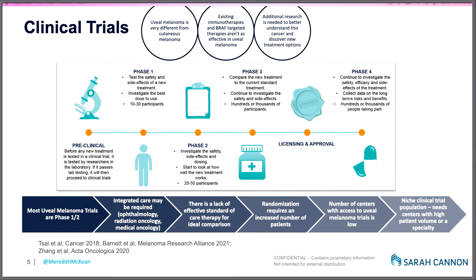One question I get from a lot of patients is: what does it mean to be in a phase one study? Any drug first starts in the preclinical setting — there's a rationale that it's targeting GNAQ or affecting the immune cells — and this has been tested on tumors grown in Petri dishes. The drug is applied to see if it's shrinking or slowing down the tumors, and then tested on animal models, and that data is submitted to the FDA.